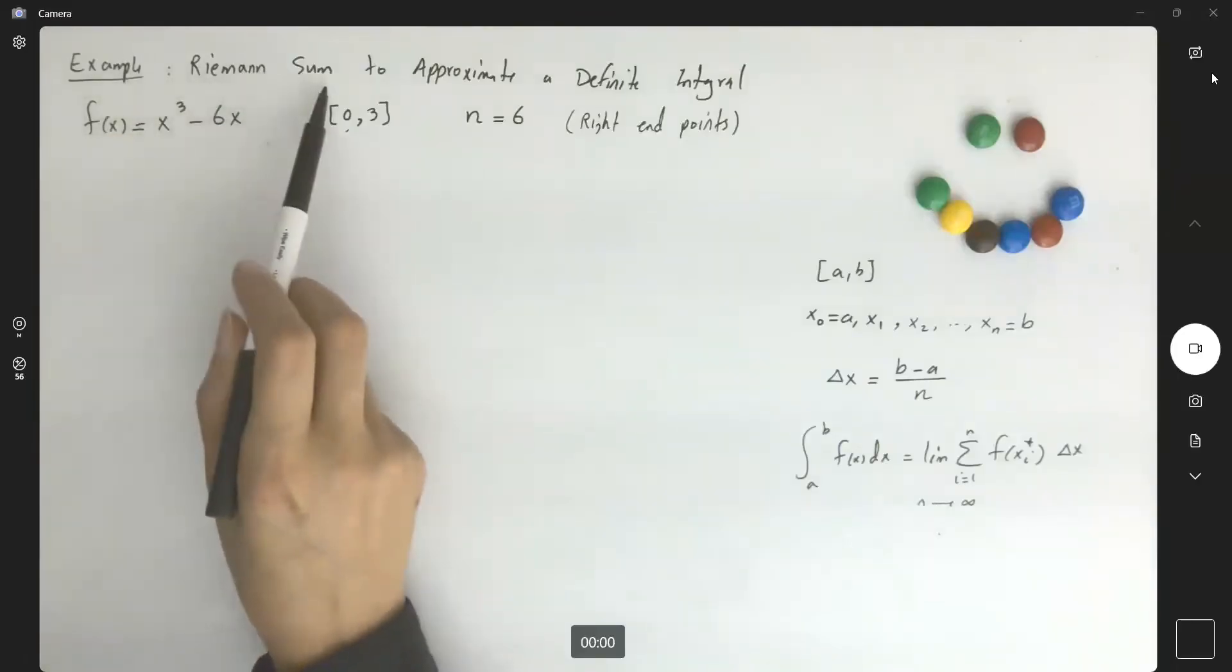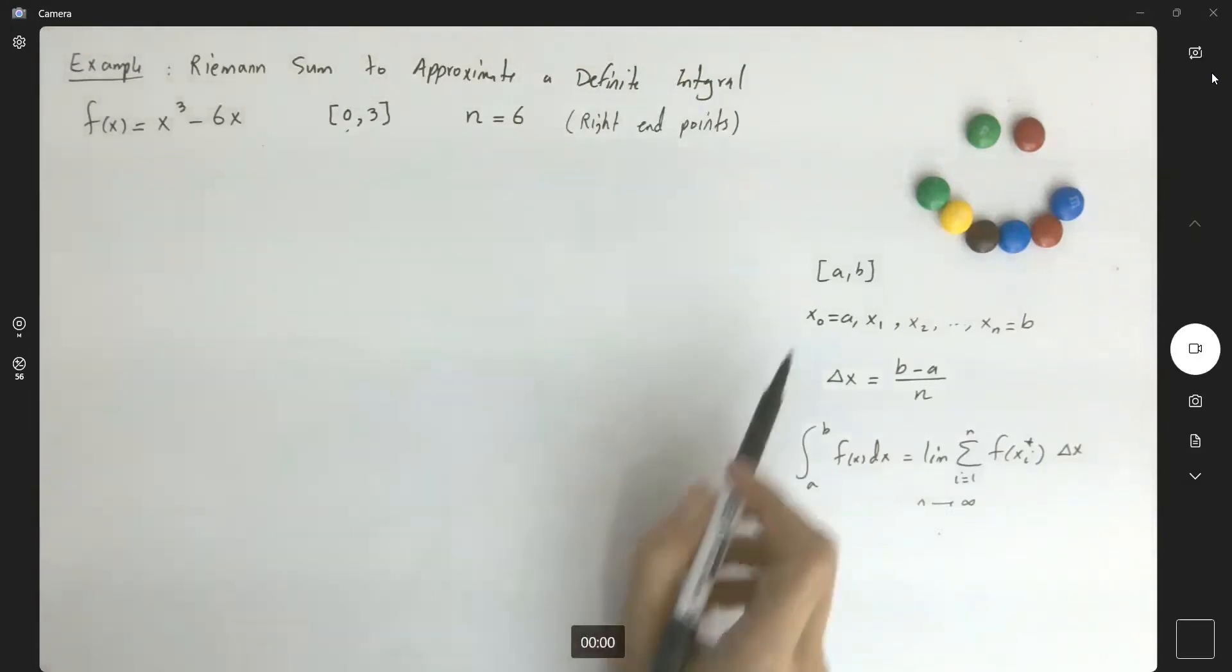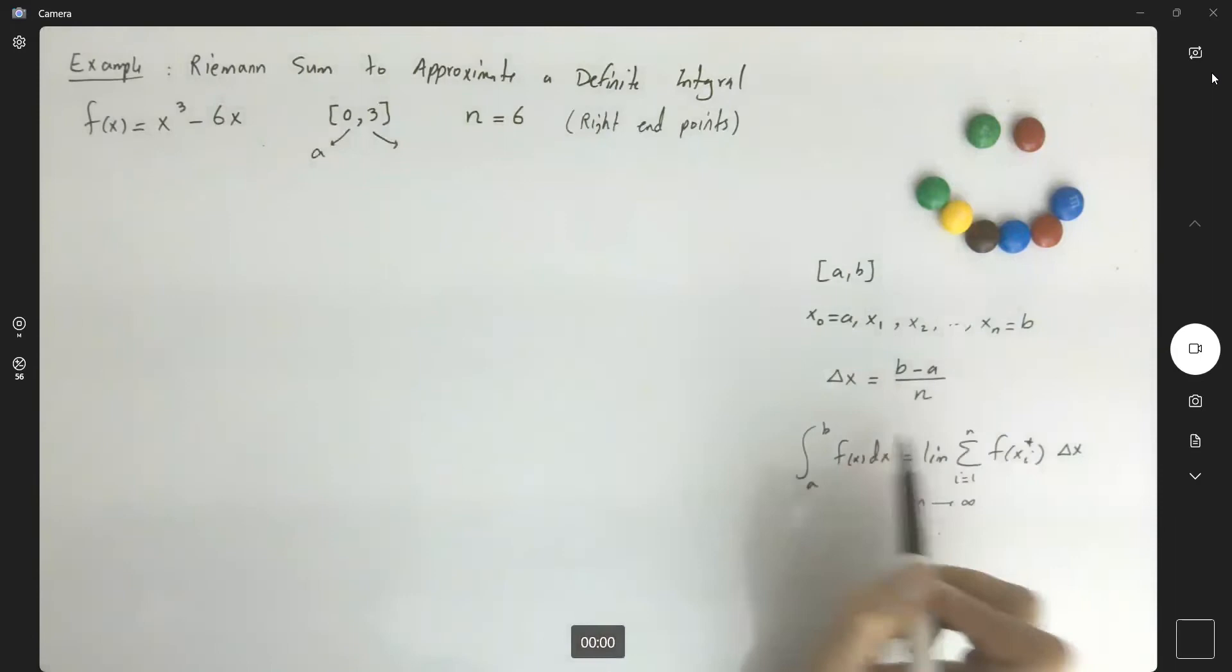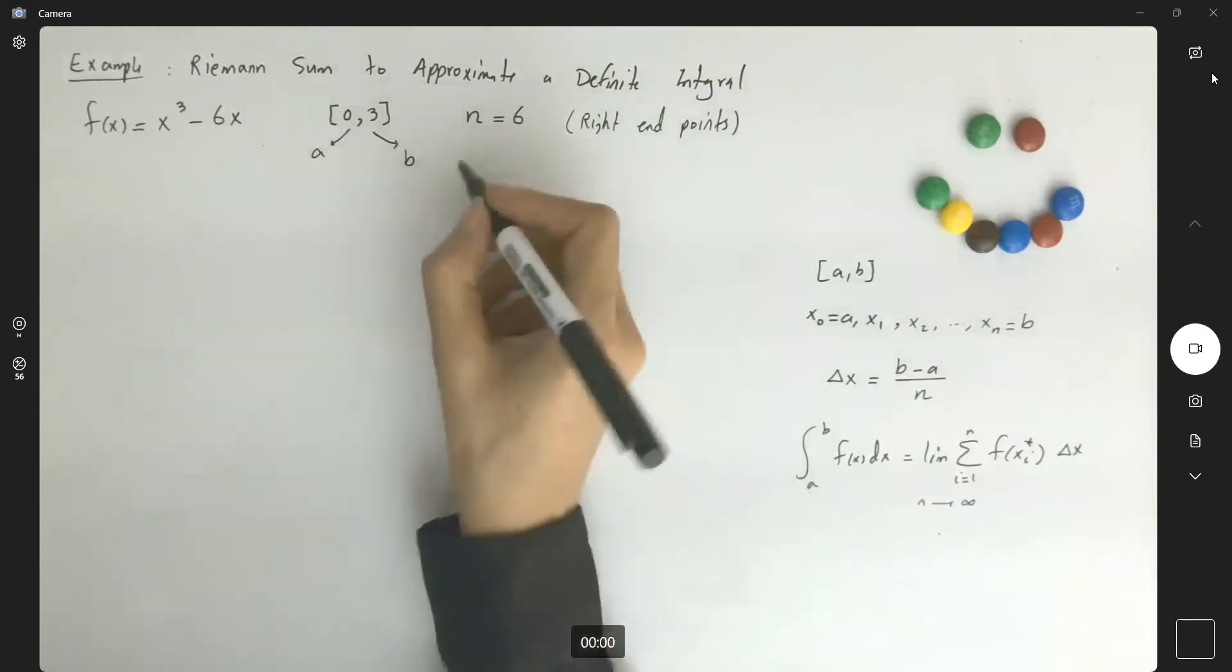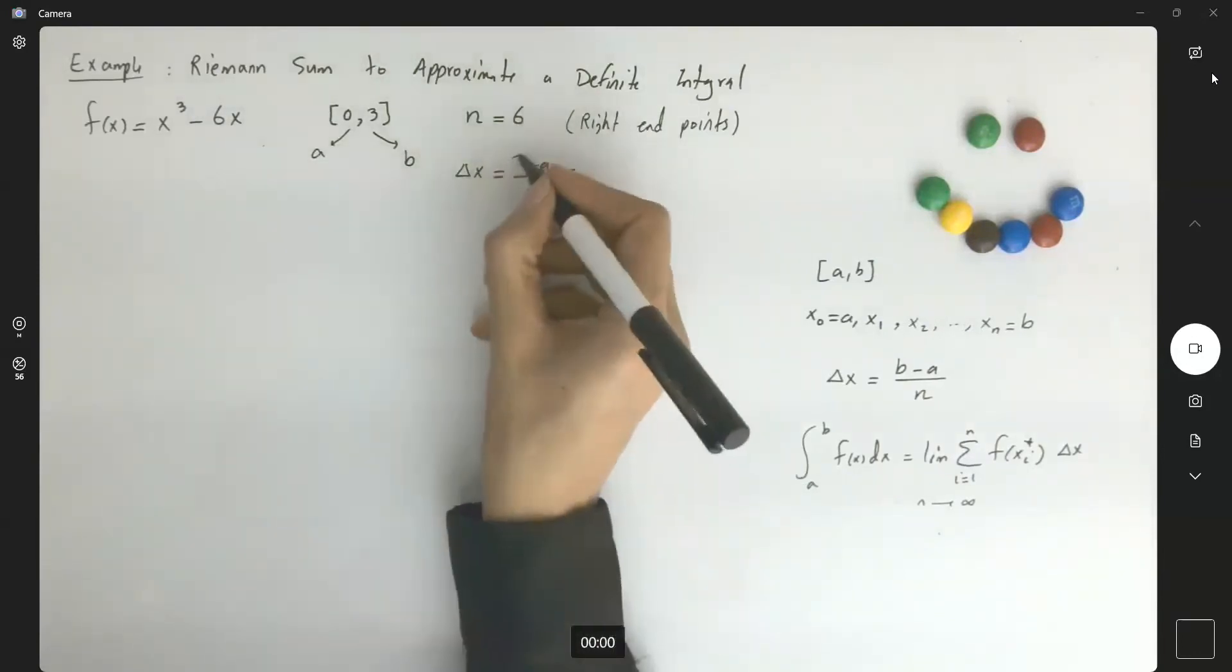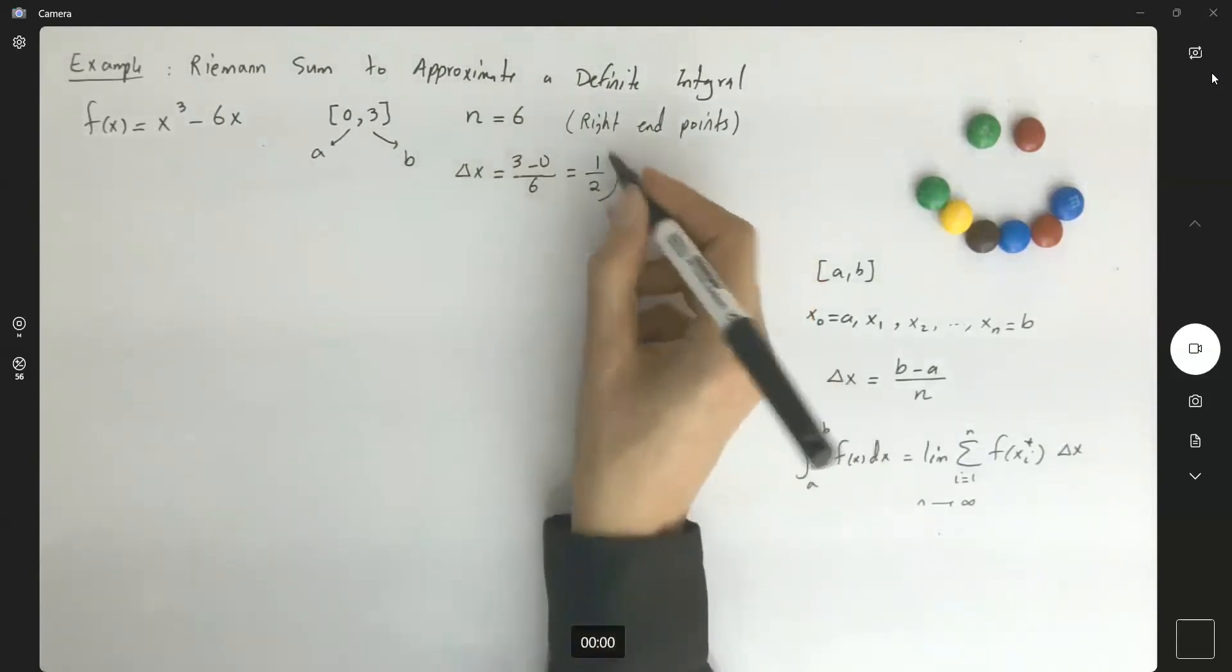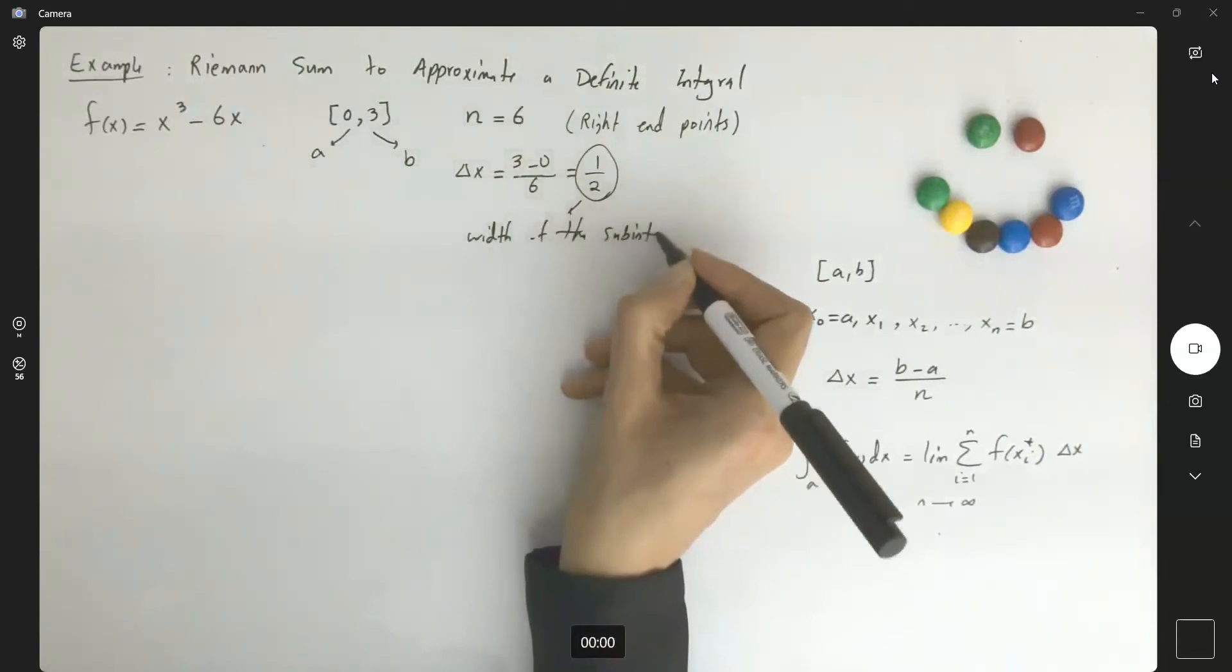Let me give you one example in applying Riemann's sum using the right endpoints and evaluating the integral. Remember the definition how we applied that. X sub 0 is nothing but a, and X sub n is equal to b. In this case, a is given to us as 0. So delta x by definition is b minus a divided by n, or 3 minus 0 divided by 6, which is just a half. This means that the length or the width of the subintervals is a half with all the subintervals.